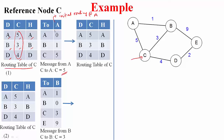Step by step: C is directly connected to A, so that entry does not change. For destination B, C is currently directly connected at cost 3. Via A, the cost would be 5 plus 1 equals 6, which is more than the current estimate, so C retains its current estimate and keeps the next hop as before. For destination D, C did not get any new information from A, so it retains the previous information. After receiving a message from A, this is the updated routing table at C.